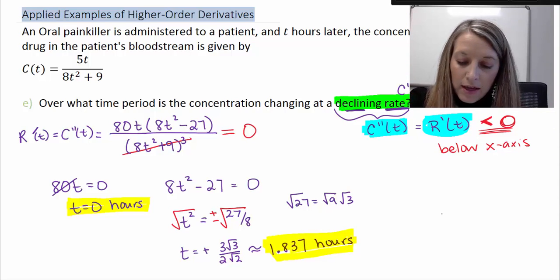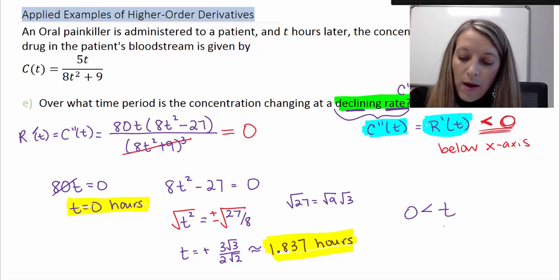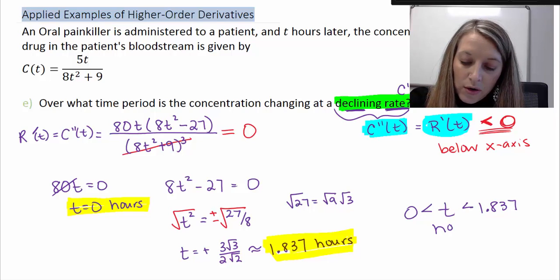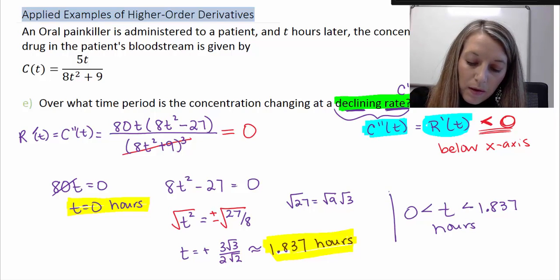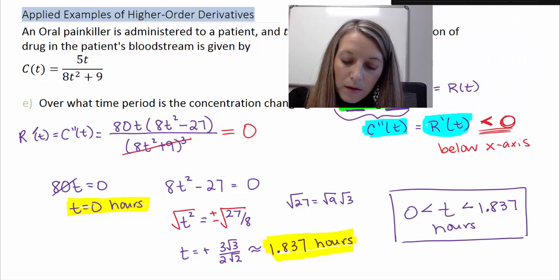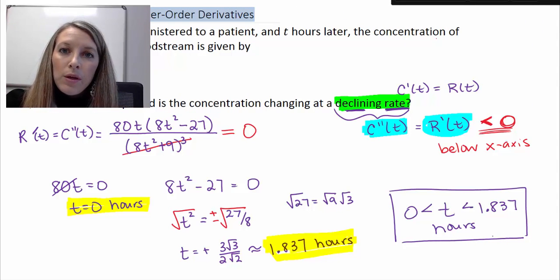So my final answer is when my time is greater than zero hours, but shorter than my 1.837. And this is, of course, in hours.